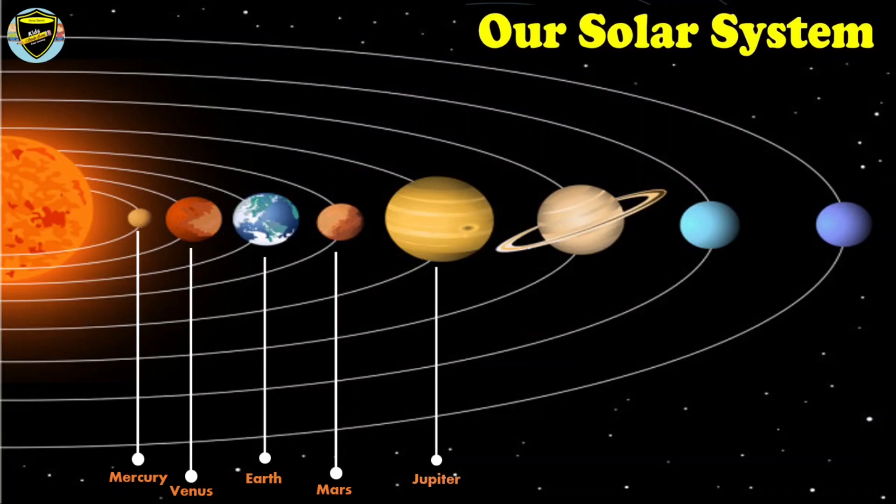The sixth planet in the solar system is Saturn. Saturn is the second largest planet in the solar system.